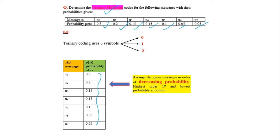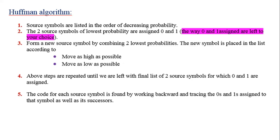This is the algorithm for Huffman coding. In Huffman binary coding, we use only 2 symbols: 0 and 1. But in ternary coding, we use 0, 1, and 2. In quaternary coding, we use 0, 1, 2, and 3. That is the only difference between these coding schemes.